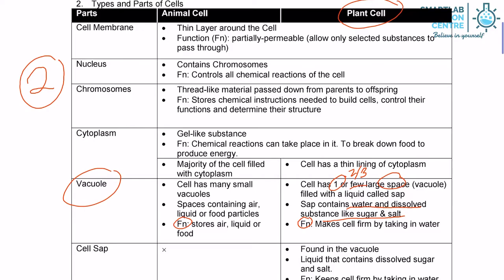The function, however, is actually to make the cell firm by taking in water. If you write down this as the function, it is also acceptable. Meaning, if you write down the function of the vacuole in plant cells is to store water and dissolved substances such as sugar and salt, that is also accepted.